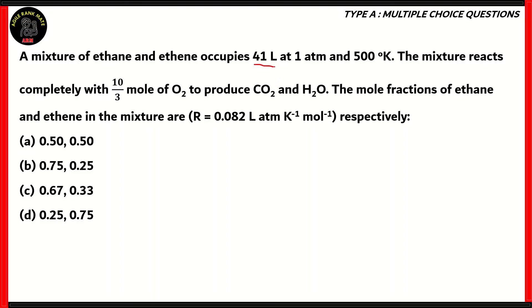What are the values given to us? We know there are two compounds in this mixture: ethane and ethene. The formula of ethane is C2H6 and the formula of ethene is C2H4. The total volume is 41 liters, the total pressure is 1 atmosphere, and the total temperature is 500 degrees Kelvin. The mixture reacts completely with 10/3 moles of oxygen.